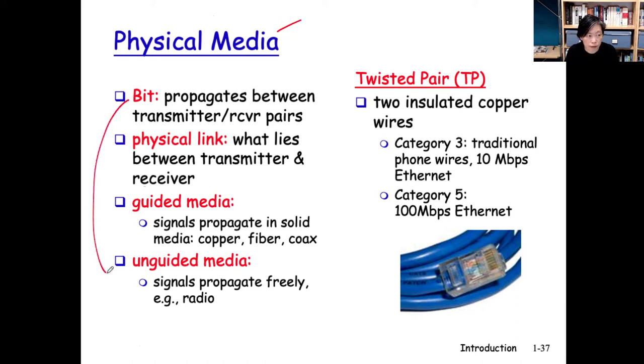Now first, let's define some terms. Bits: these bits are propagated between the transmitter and the receiver. Between the transmitter and the receiver, whatever the media is, is called a physical link. These links can be wired—there's a special term called guided media for it. If it's a wireless link, then it's unguided media, meaning that the signal might just go propagating omnidirectionally everywhere.